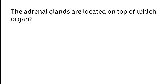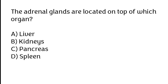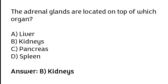The adrenal glands are located on the top of which organ? Liver, kidneys, pancreas, spleen. The correct answer is option B: the adrenal glands are located on the top of the kidneys.